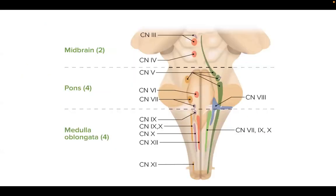Here is a nice illustration: the midbrain contains cranial nerve 3 and 4 nuclei. Part of cranial nerve 5 spans both the midbrain and pons. The medulla oblongata contains cranial nerves 9, 10, 11, and 12.